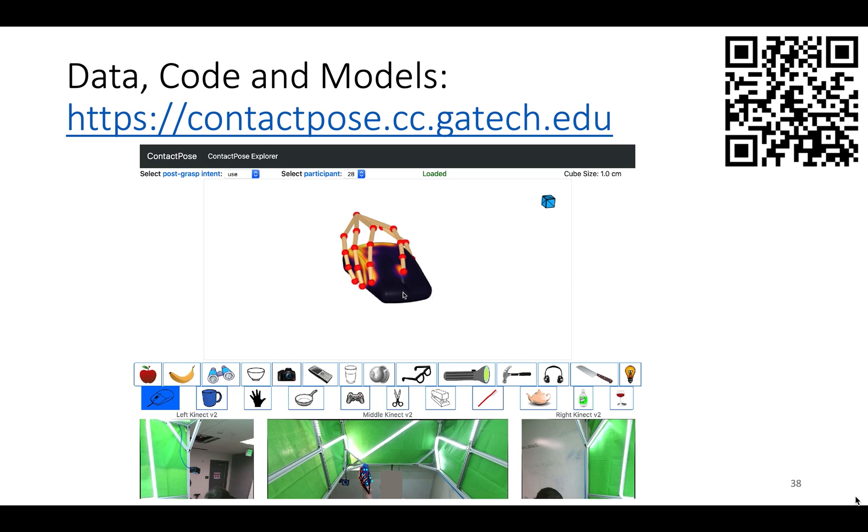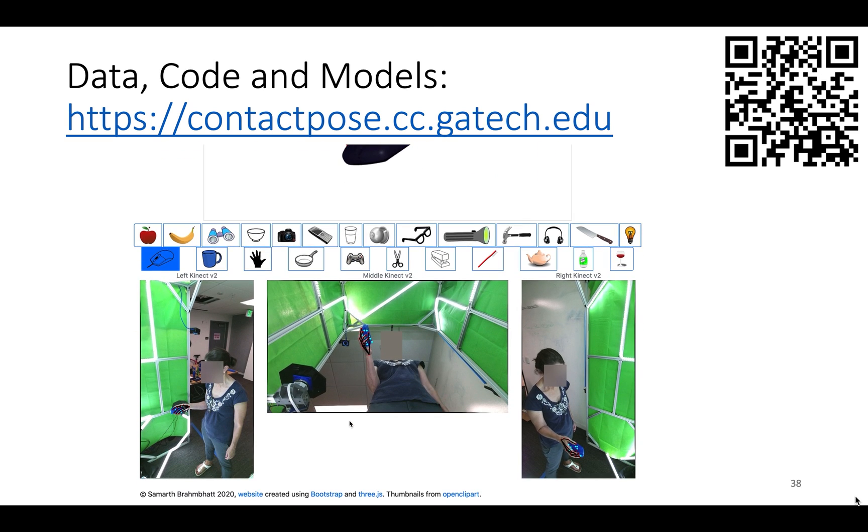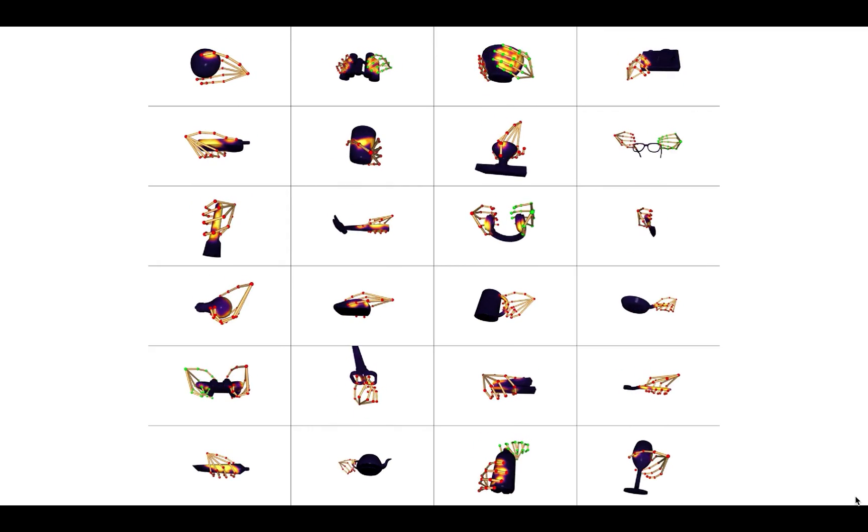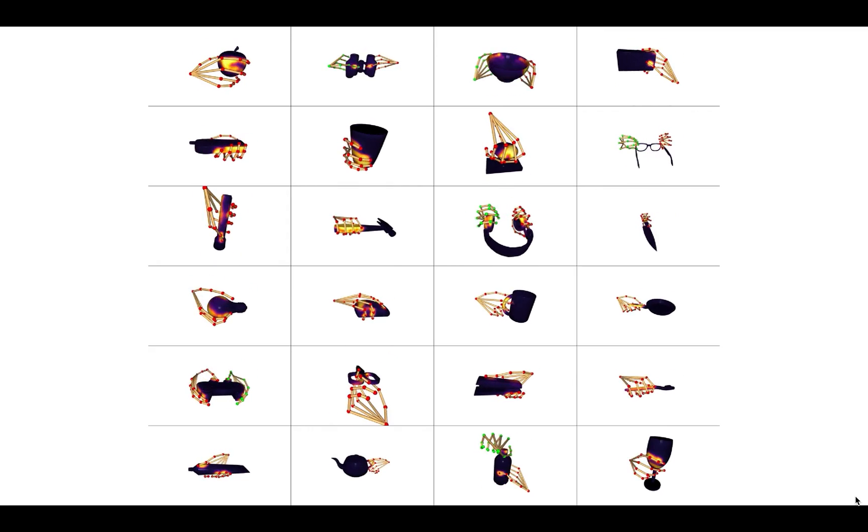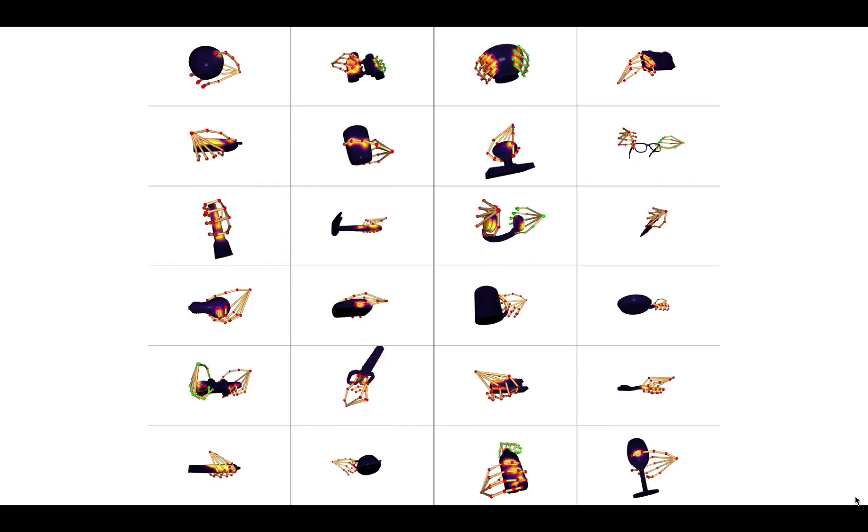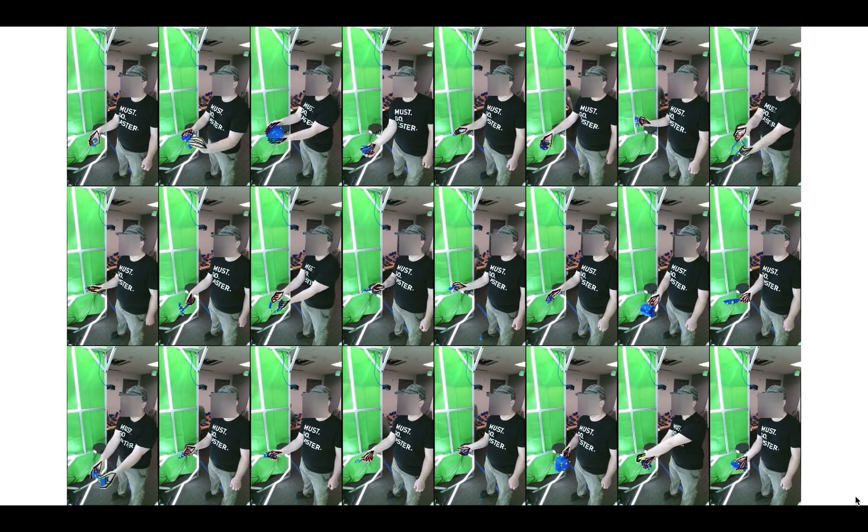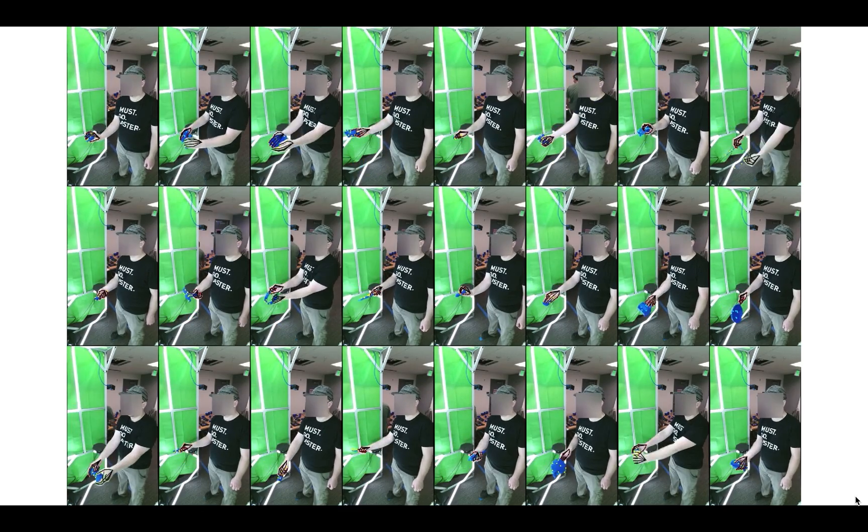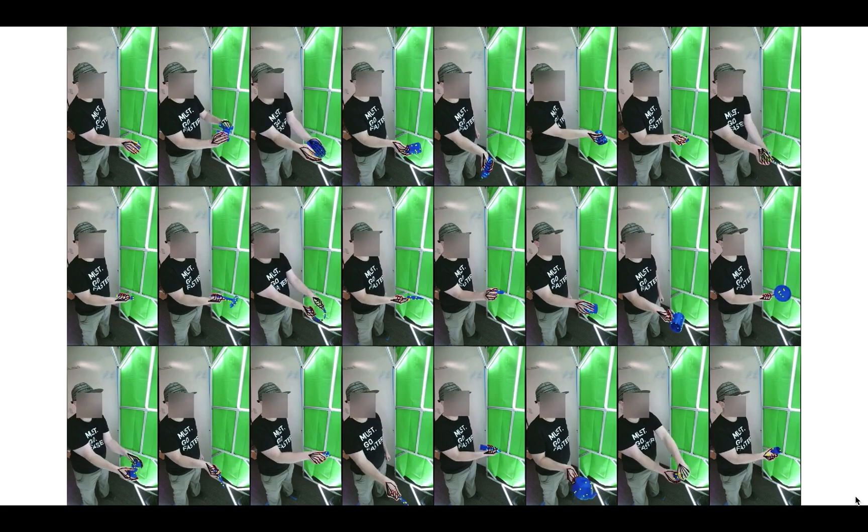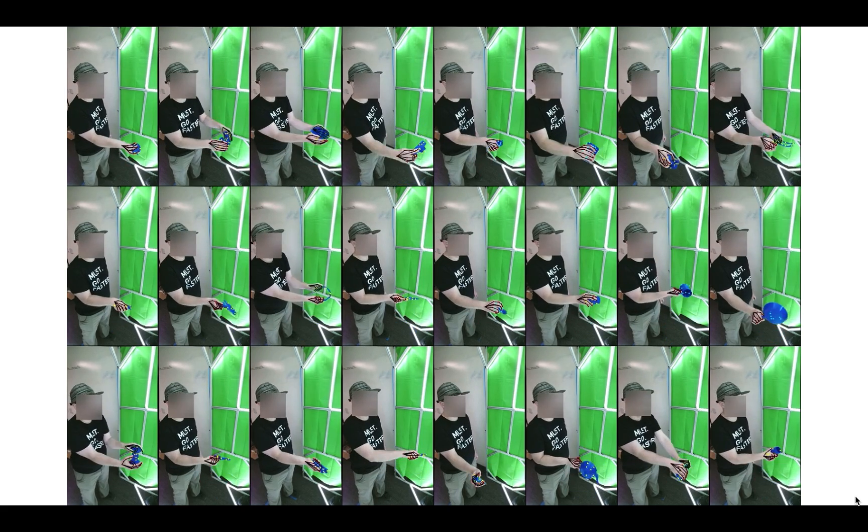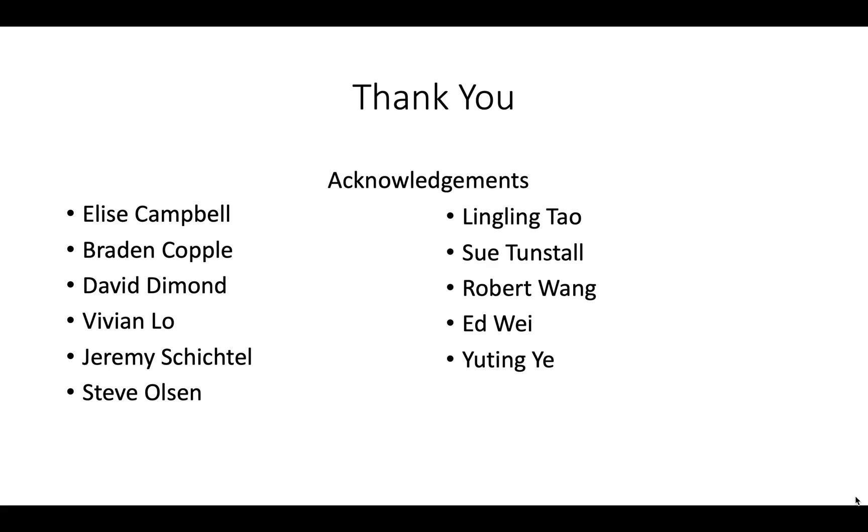You can explore and download the dataset, code and models at this website. And here are some example contact maps and 3D hand joints from ContactPose. Hand and object pose projected into images from the first Kinect, second Kinect and third Kinect. Thank you.